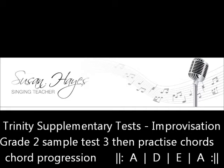Why don't you have a go? And if you prefer this, you can ask the examiner to put the improvisation into 3-4 to give it a waltz feel. There are still 4 chords: A, D, E, and A.